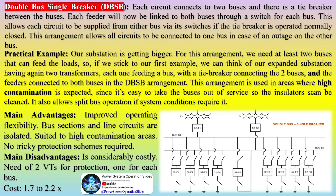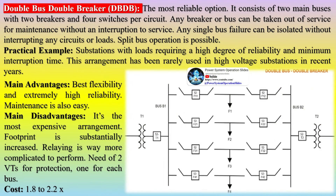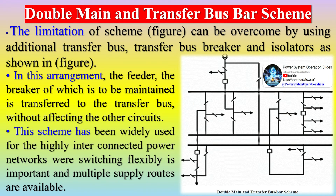The double busbar scheme with bypass isolator across circuit breakers is very suitable for large generating stations as well as large grid substations forming part of a well-interconnected system wherein a variety of grouping of circuits is required. In an alternative arrangement, the bypass isolators are connected to one of the main busbars, constituting a double busbar scheme with main reserve and transfer busbars. In both these schemes, use of temporary earthing devices is called for during breaker maintenance. As temporary earthing devices can result in serious accidents if not removed, it is preferable to provide isolators on either side of the circuit breakers with integral earthing switches having mechanical interlocking features.